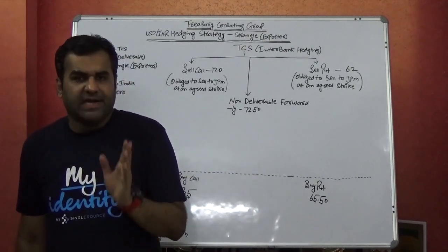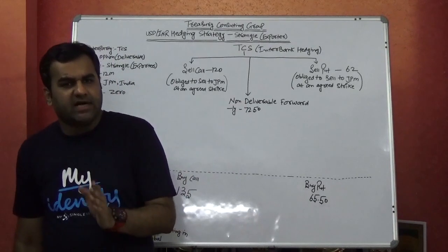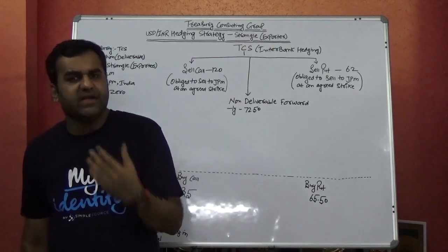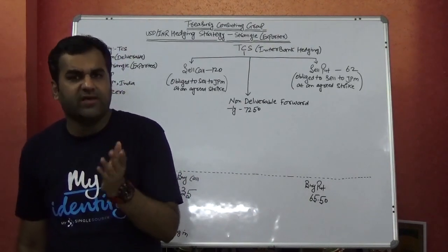Especially in companies in India, that ratio goes to 98 out of 100 who do not have an appropriate treasury.